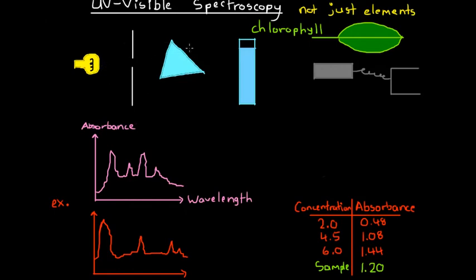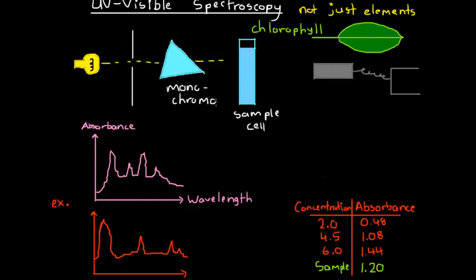The way UV visible spectroscopy works is that we have a lamp that radiates all wavelengths of light. We have a slit and a monochromator, which is just a glass prism, and we use these to select one wavelength of light. Once we pass this light containing all frequencies, we select one wavelength and pass it through a solution in our sample cell. The sample cell will absorb it to a different extent depending on what wavelength is selected, much like atomic absorption spectroscopy.